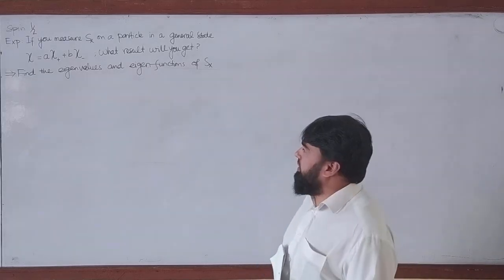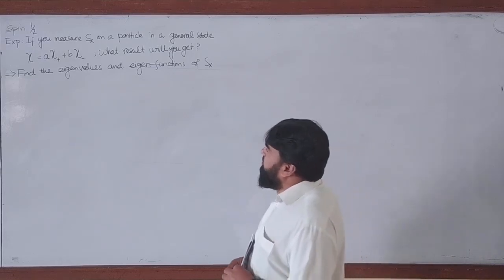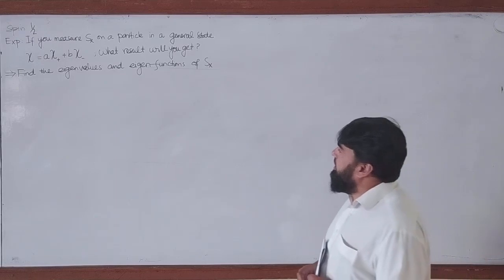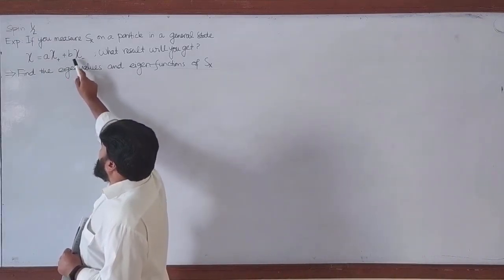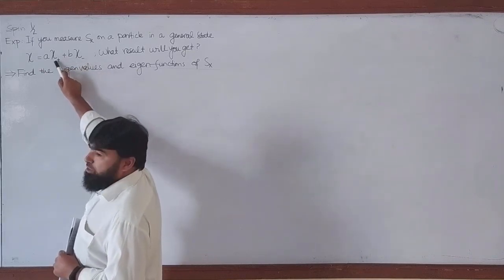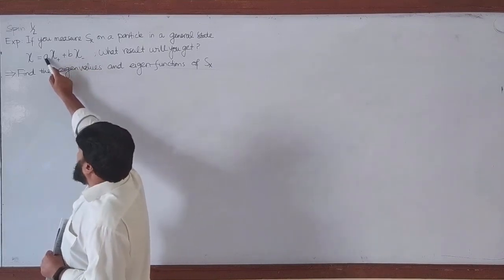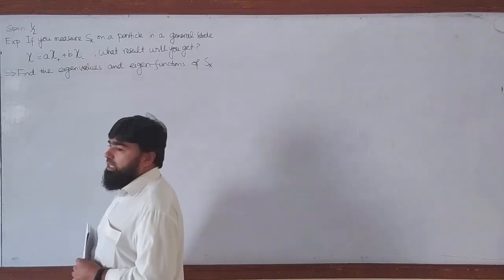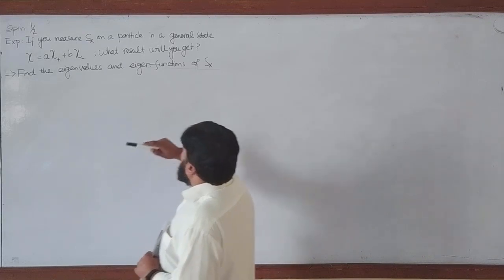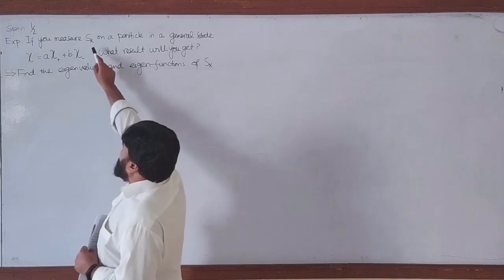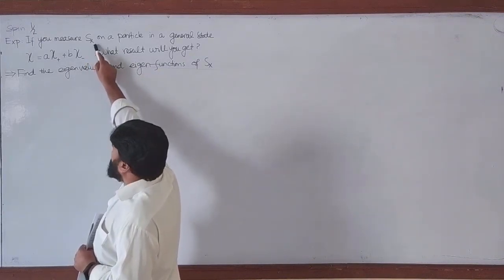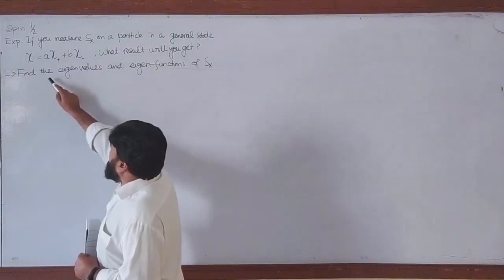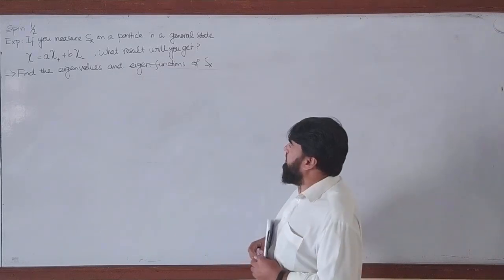We will start with the spin-1/2 particle again. We will discuss an example: if we measure Sx on a particle in the general state χ = Aχ+ + Bχ-, where χ+ is the spin-up state and χ- is the spin-down state, A and B are the amplitudes giving the probabilities for spin-up and spin-down respectively. What result will you get if you measure Sx, one of the components of the spin angular momentum, on this state? This means we need to find the eigenvalues and eigenfunctions of Sx.